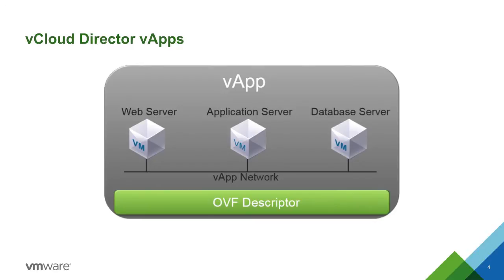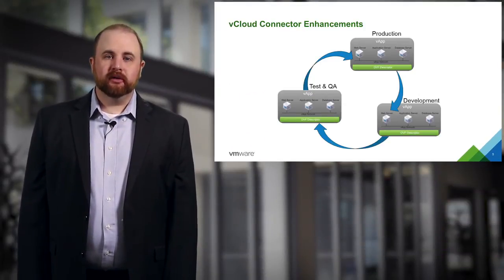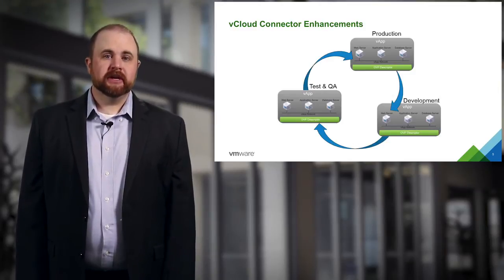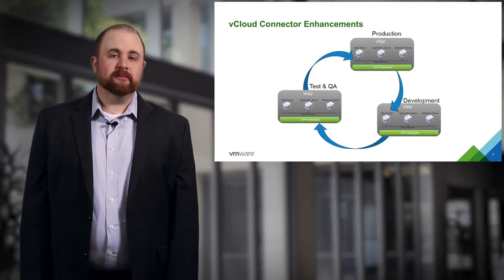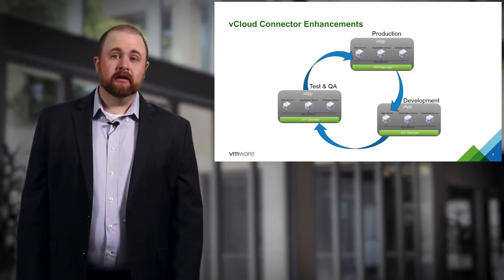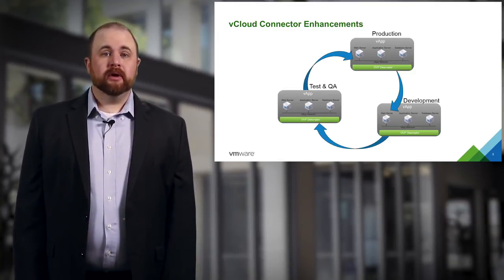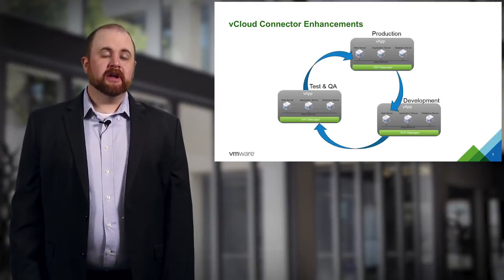A vApp can contain network attributes such as IP address and MAC addressing of the virtual machines, and also include NAT and firewall rules for communication between virtual machines within the vApp. Customers can leverage their on-premise vCloud Director deployment and package IT services or virtual machines in a vApp, then move the entire vApp using vCloud Connector into vCloud Air for production. That production vApp can be running in vCloud Air while an exact copy or clone can be created and given to your development team in another location working on the next release.